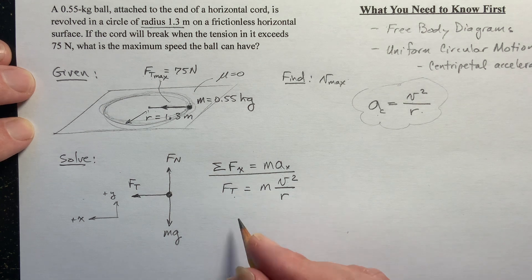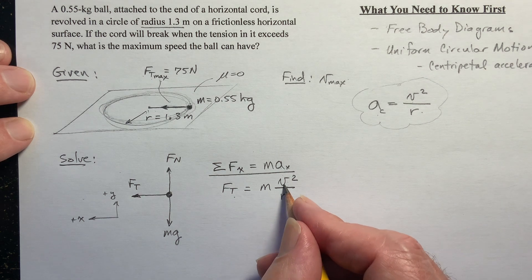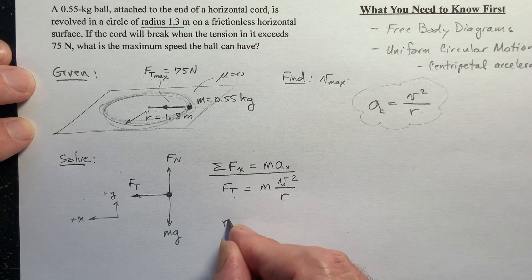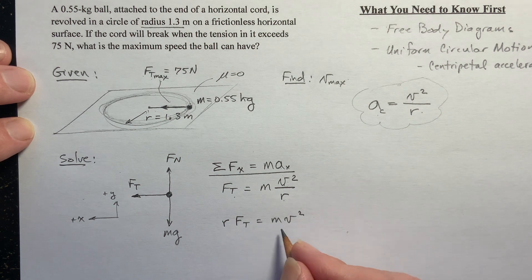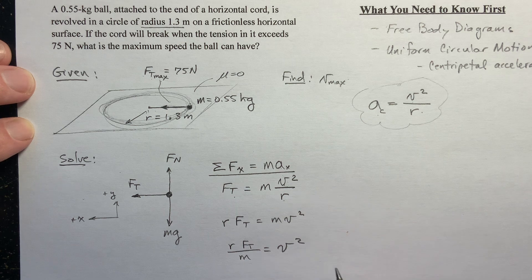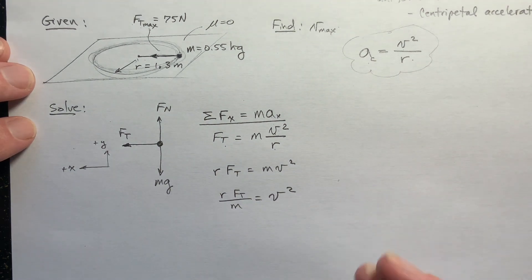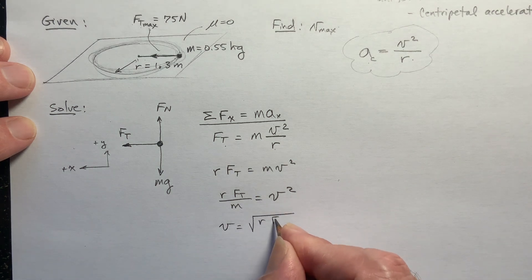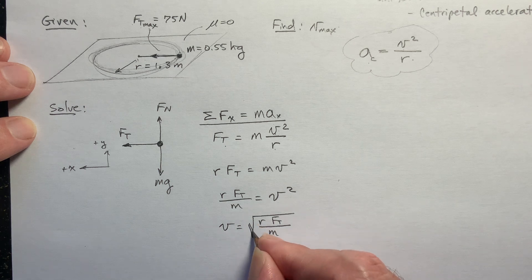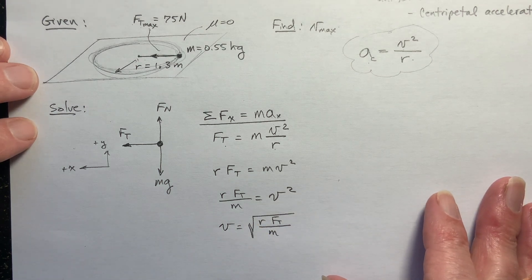So let's solve for the velocity. I'm going to multiply both sides by r. And then I'll divide both sides by the mass. And now I can solve for the velocity. Just take the square root of both sides. And this should get us to our answer.